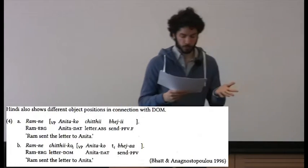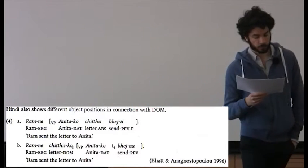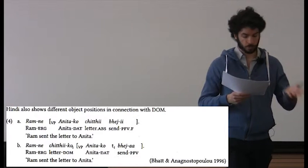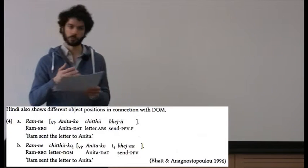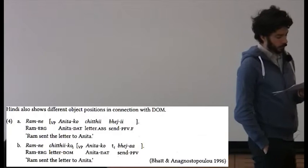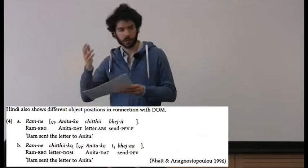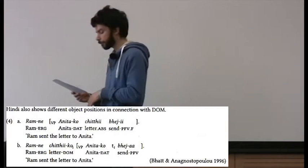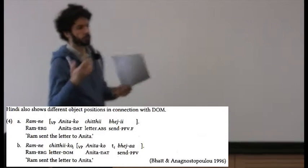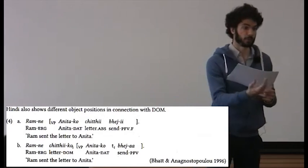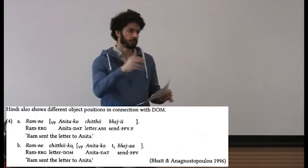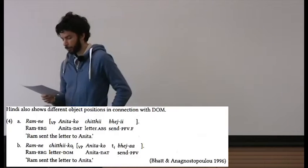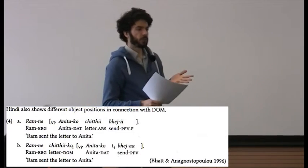In the sentence 'los enemigos no entregaron a su hijo a ningún prisionero' — the enemies did not deliver any prisoner to his son — you can either have differential object marking on 'any prisoner' or not; both sentences are fine. But only when you have differential object marking can the direct object bind the possessive pronoun in the recipient, giving the meaning that the enemies did not deliver any prisoner to that prisoner's son. This suggests that the object with differential object marking is structurally more prominent.